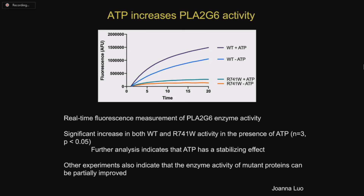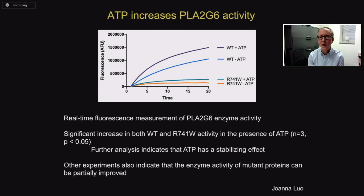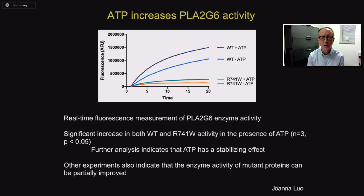We've done some proof-of-concept experiments suggesting this can be done, at least for some mutations that cause INAD. We developed more sophisticated ways to measure protein function, tracking activity over time and seeing how stable it is. We found that ATP — an energy molecule used in cells, though it can't be used as a drug — not only helped boost the activity of the wild-type PLA2G6 enzyme, but also boosted one of the mutant proteins, R741W. Other proof-of-concept experiments also suggest you can boost and improve the activity of PLA2G6 protein containing a mutation and make it more stable.